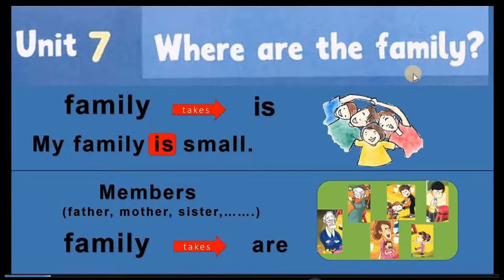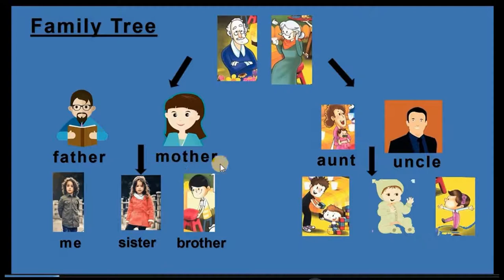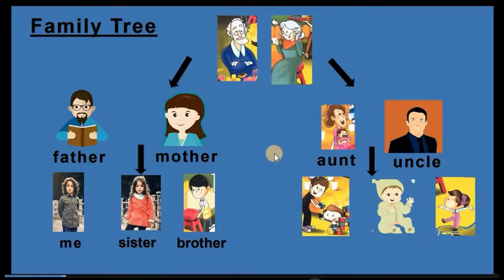Where are my father, mother, sisters, and brothers? Look, this is the family tree. This is the grandfather or grandpa, and this is the grandmother or grandma. This is the father and the mother. Here, this is aunt and uncle. Aunt is the sister of my mother or maybe the sister of my father — الخالة والعمة.